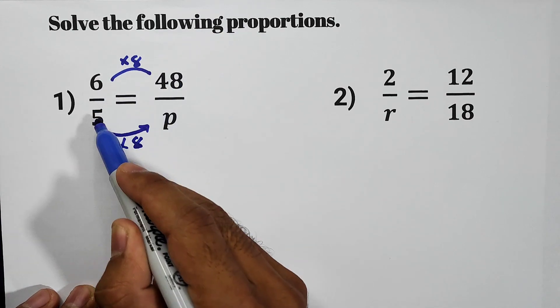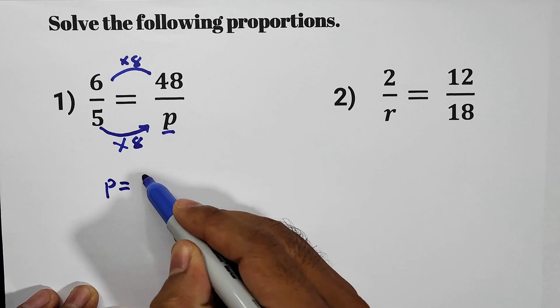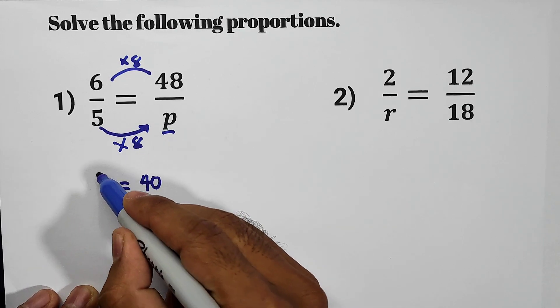6 times 8, 48. 5 times 8, therefore P is equal to 40. So the value of P is 40.